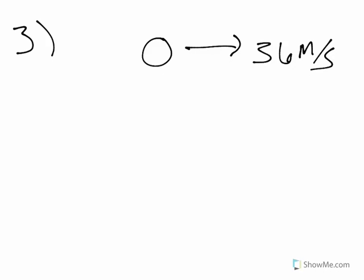Number three: when Reggie stepped up to the plate and hit a 0.15 kilogram fastball traveling 36 meters per second, the impact caused the ball to leave his bat with a velocity of 45 meters per second in the opposite direction. If the ball's impact lasted 0.002 seconds, what force did Reggie exert on the ball? We know it's an impulse problem because we have a force and a time. Since the two velocities are going in opposite directions, we make the 45 negative.